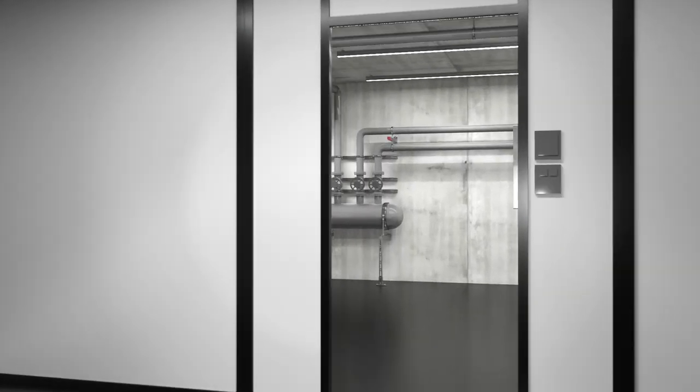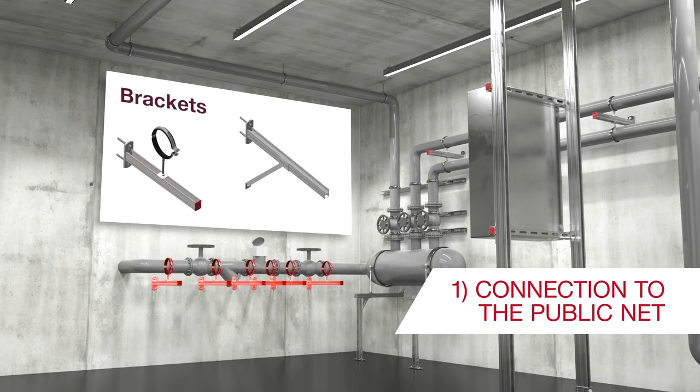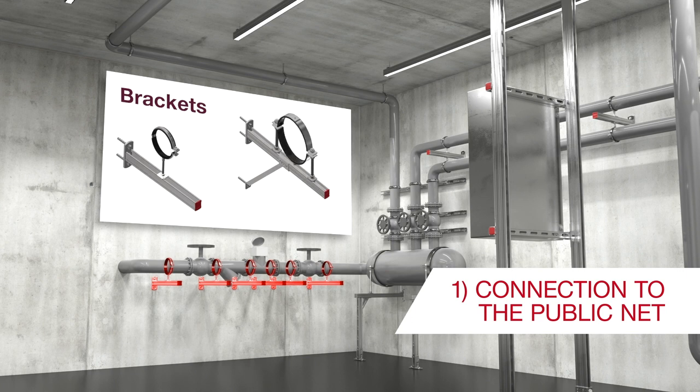Let's have a look at the connection to the public net. A consumption measuring device and valves are typically fixed on brackets, either single supported or braced.